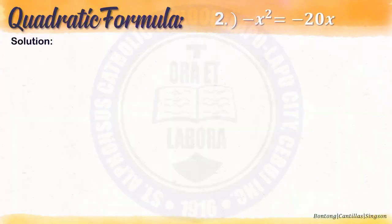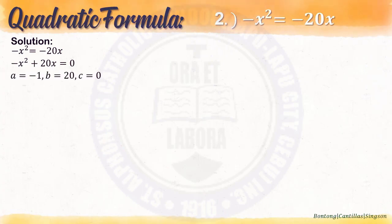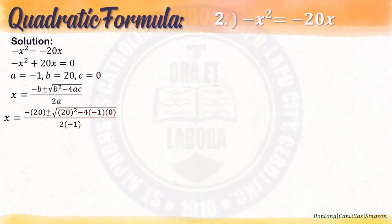Example number 2: negative x squared equals negative 20x. Step 1: Transform to general form. Transpose negative 20x to the left side to get negative x squared plus 20x equals 0. Step 2: a is negative 1, b is 20, c is 0. Step 3: Substitute into the quadratic formula. x equals negative times 20, plus or minus square root of 20 squared minus 4 times negative 1 times 0, all over 2 times negative 1.